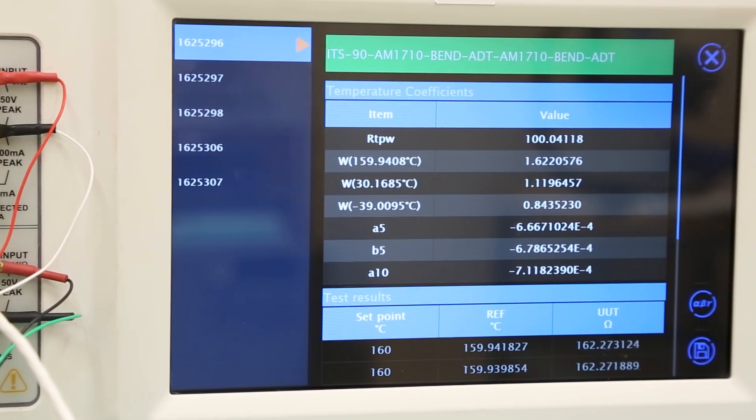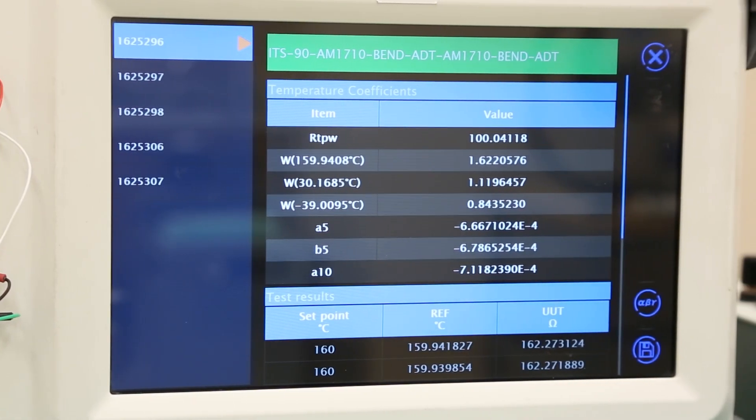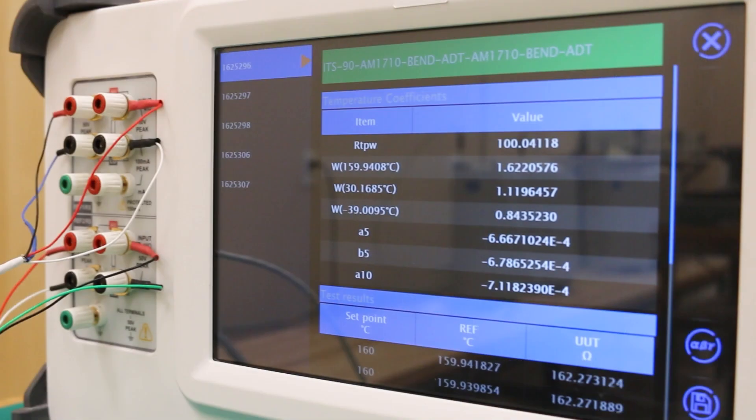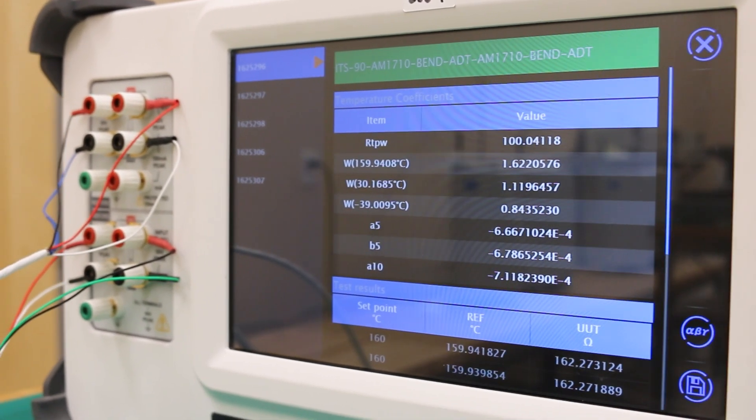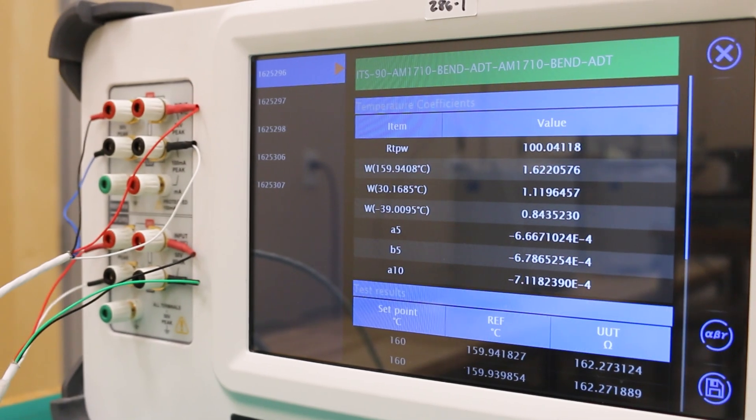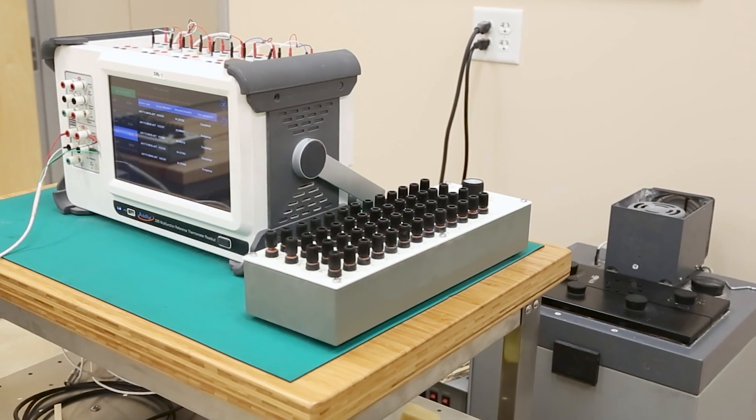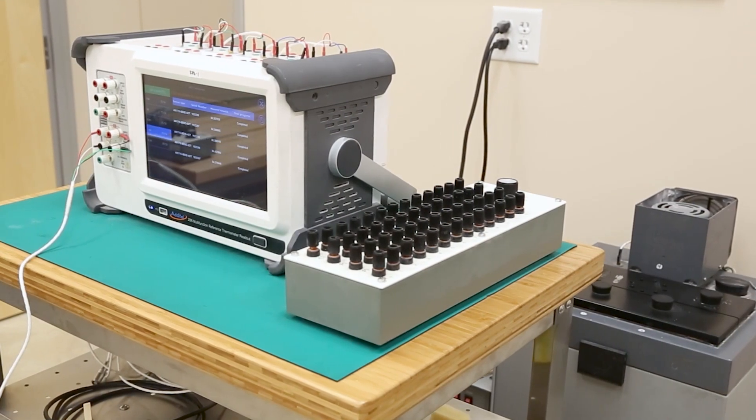Once all testing is complete, calibration results can be saved and reviewed immediately. The Aditel 286 automatically calculates resistance ratios, ITS-90 temperature coefficients, temperature averages, and more, making it one of the most intuitive and easy to use electrical bridges on the market.